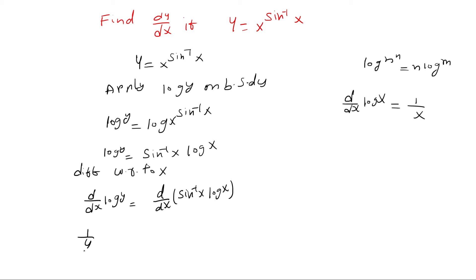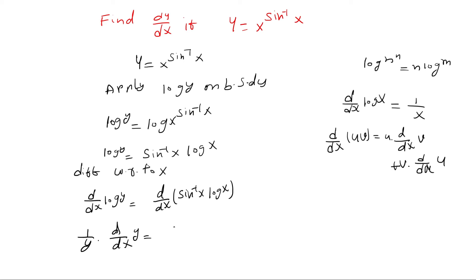So 1 by y into dy by dx equals, applying the product rule d by dx of uv equals u into d by dx of v plus v into d by dx of u. The first term is sin inverse x into d by dx of log x, plus the second term is log x into d by dx of sin inverse x.